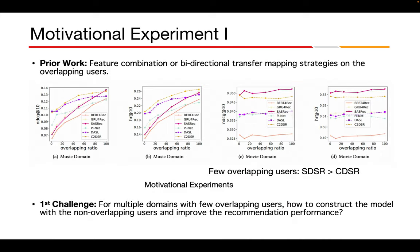We conduct some motivational experiments to address our purpose. We selected three single-domain sequential recommendation methods, including BERT4Rec, GRU4Rec, and SASRec, and three cross-domain recommendation methods, including DTCDR, PINet, and C2DSR. Here is the result of the comparison in the Amazon dataset. The solid lines represent single-domain methods, while the dashed lines denote the cross-domain methods.